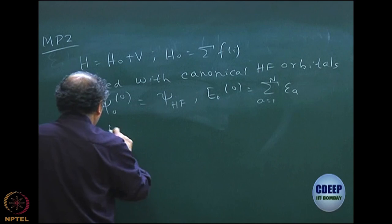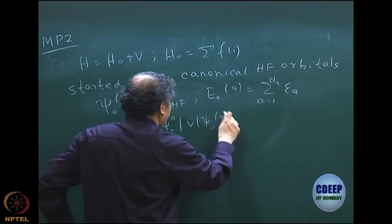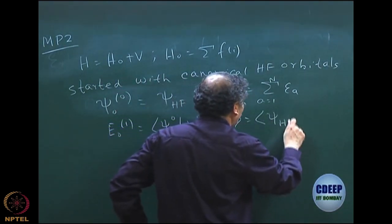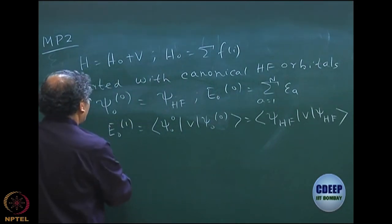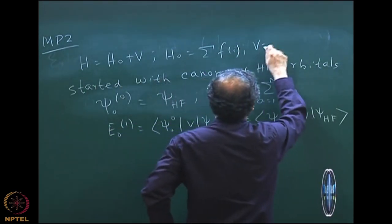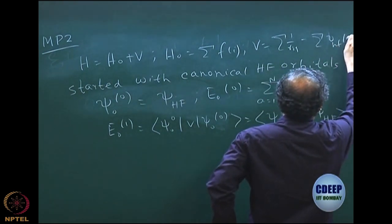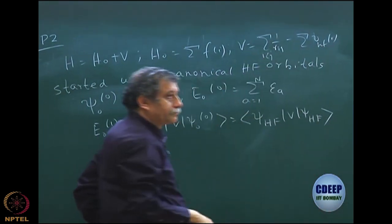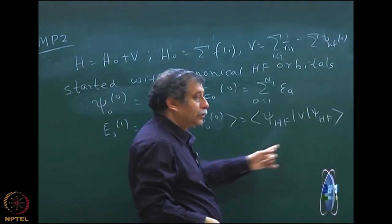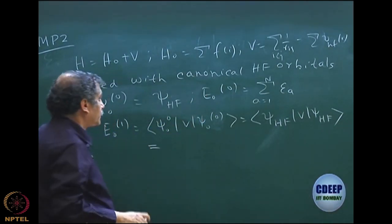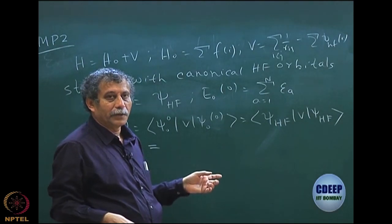Then we had E naught 1, which was ⟨psi-0,0 | V | psi-0,0⟩, which is ⟨psi Hartree-Fock | V | psi Hartree-Fock⟩. V was essentially, since H naught is sum of the Fock operator, V was sum over 1/r_ij minus the V Hartree-Fock one-particle part. If I put this and apply the Slater rule, what would E naught 1 be? Can somebody remember the value?